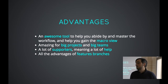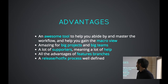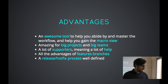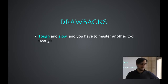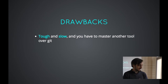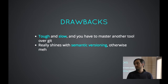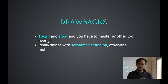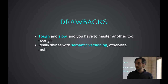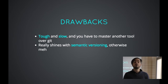You get all the advantages of feature branches because GitFlow is based on it. You have a release and hotfix process well defined, which really helps deployments a lot. But it still has some drawbacks. It's really more complex, so with more complexity comes more slowness. It's tough to master because you have an additional tool on top of Git to learn. You have a lot of branches everywhere and a lot of merging in both directions. It really shines with semantic versioning because tagging is embedded in it, but if you're not using semantic versioning, it's not really that useful.